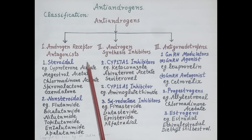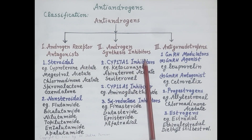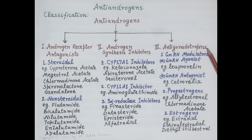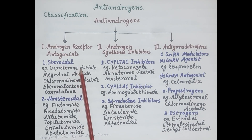The first category is androgen receptor antagonists — these agents work by blocking the effect of androgens. The second category is androgen synthesis inhibitors — these agents inhibit synthesis of androgens. The third category is anti-gonadotrophins, which reduce androgen levels in the blood.